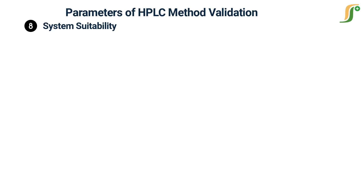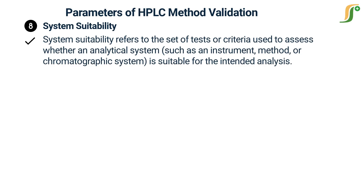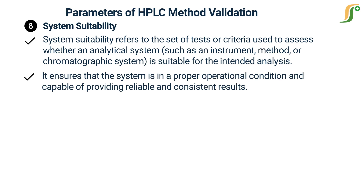The eighth parameter is system suitability. System suitability refers to the set of tests or criteria used to assess whether an analytical system, such as an instrument, method, or chromatographic system, is suitable for the intended analysis. It ensures that the system is in a proper operational condition and capable of providing reliable and consistent results.